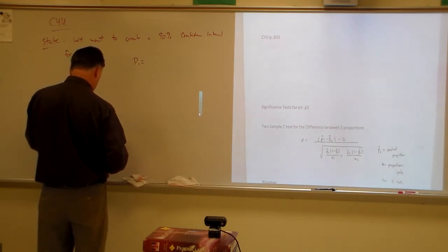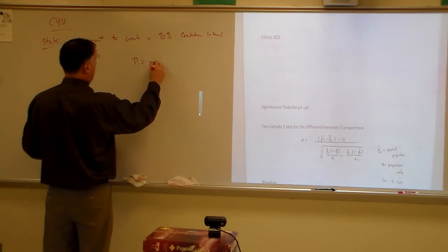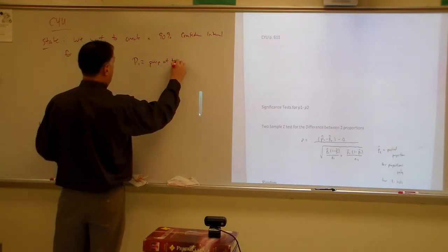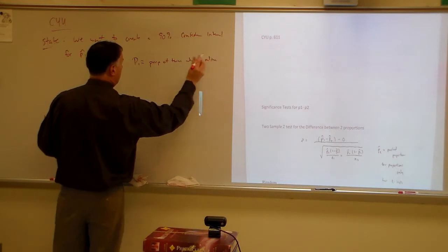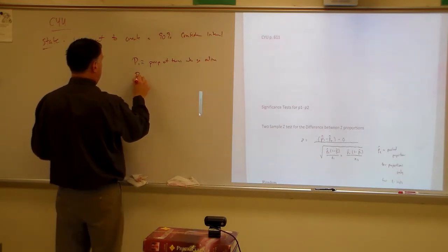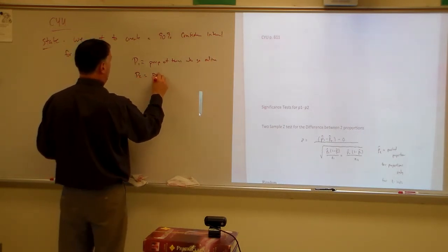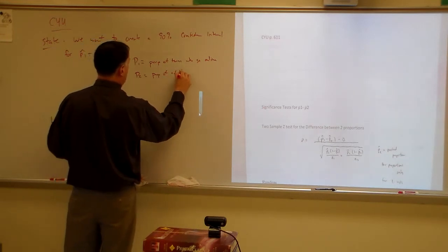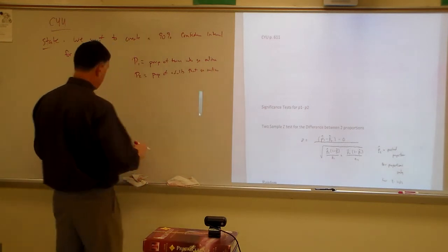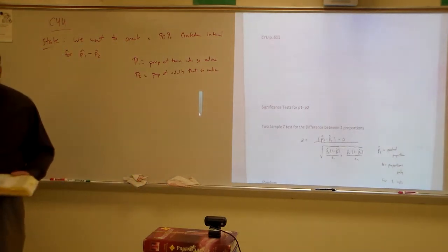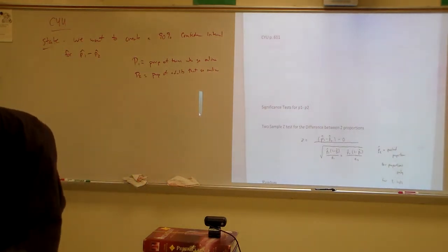Let's say P1 equals the proportion of teens who go online, and then P2 is the proportion of adults that go online. So, we have our state done pretty well.